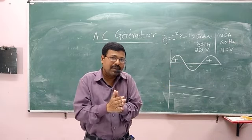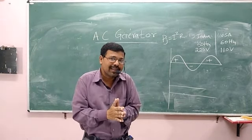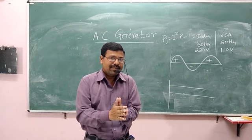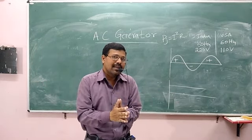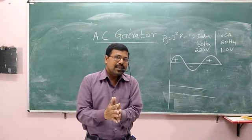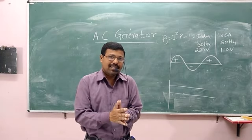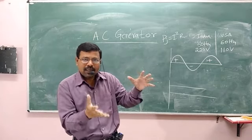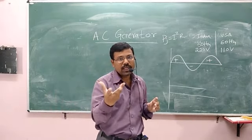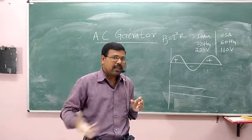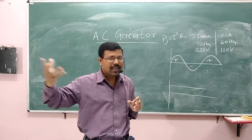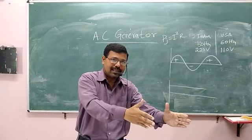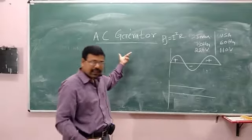In a nuclear power station, nuclear energy is converted into electrical energy. In a wind power station, wind energy is converted into electrical energy. In a solar power station, solar energy is converted into electrical energy. In a hydro power station, the kinetic energy of water is converted into electrical energy. The aim of this device is to generate electricity, but the source is different — wind, water, solar, or nuclear. In all these conversions, the AC generator is used. It is also called a dynamo or AC dynamo.